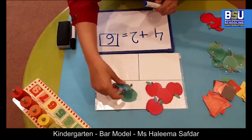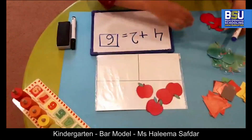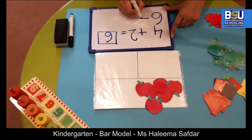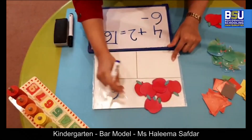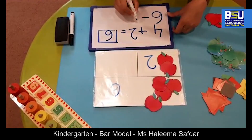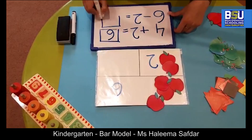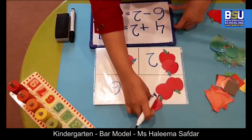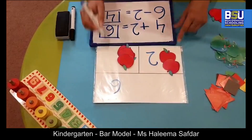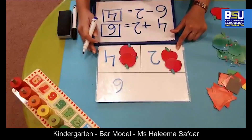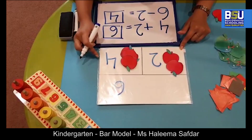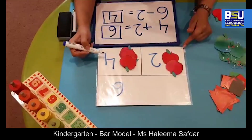Now the same statement can be used for subtraction as well. For instance, if we have six apples from which two of the apples were eaten, so six minus two equals four — one, two, three, four. In subtraction statements, the whole and one of the parts is known while the other part is unknown. So six minus two will be four.